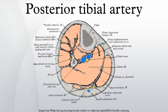The posterior tibial artery of the lower limb carries blood to the posterior compartment of the leg and plantar surface of the foot, from the popliteal artery via the tibial fibular trunk. It is accompanied by a deep vein along its course.